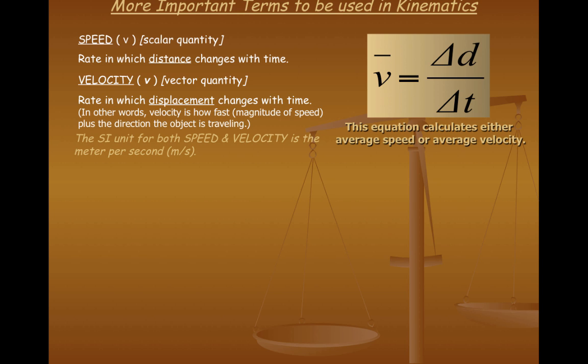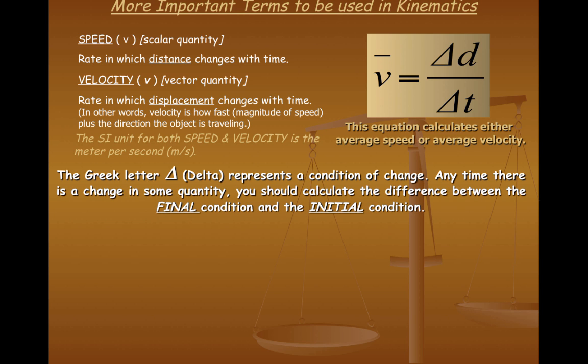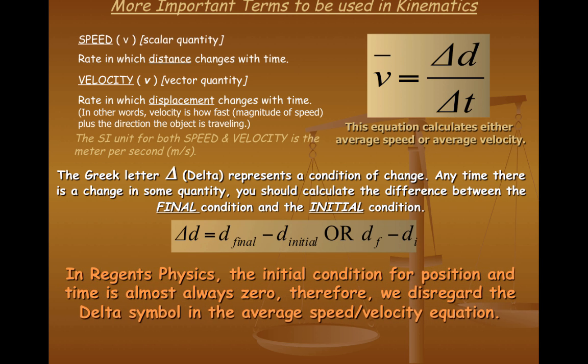So, as I said before, average speed is the rate at which distance changes with time. Average velocity is the rate at which displacement changes with time. Now, the Greek letter delta is actually a mathematical operation. And it is used to calculate the difference between a final condition and an initial condition. So, for example, when I have delta D in the numerator of this equation, D, whether it's distance or displacement, would be the final distance travel or the final displacement minus the initial distance or displacement. Or we can just use the subscripts, D subscript F minus D subscript I. Oftentimes, though, in regions physics, the initial condition for position and time are almost always zero.